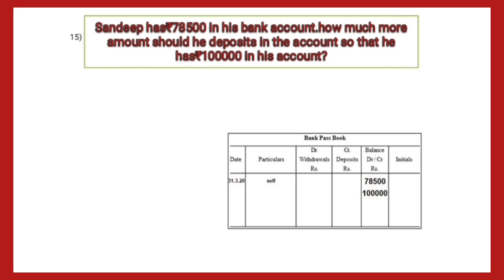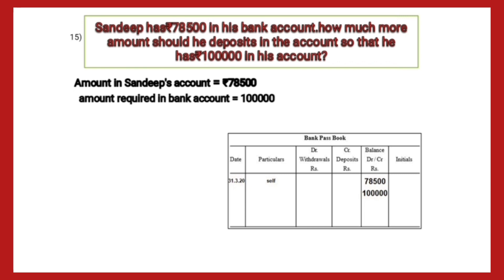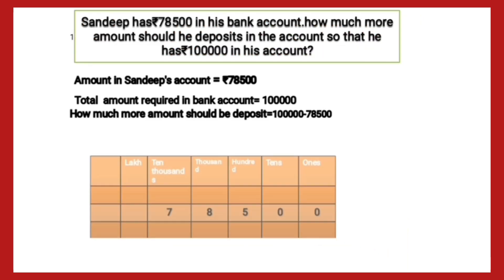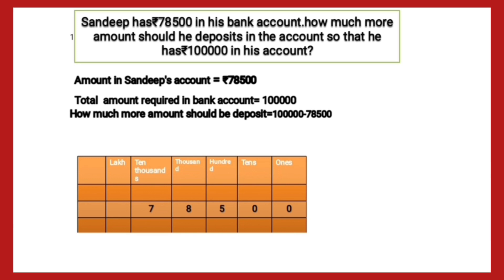For this we will restate the statement. Amount in Sandeep's account is rupees 78,500 and amount required in the bank account is rupees 1 lakh. To find how much more he needs, we will subtract 78,500 from 1 lakh. I have written it as it is, and to find the amount we will use a place value chart.